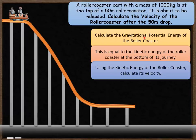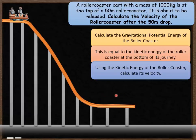The first step is to calculate the gravitational potential energy of the roller coaster at the top of its 50 meter journey. The gravitational potential energy of the roller coaster is equal to its kinetic energy when it reaches the bottom. So the loss of gravitational potential will equal the gain in kinetic energy. By the end of its journey it'll have more kinetic energy equal to the amount of gravitational potential it used to have. The last step is to use the kinetic energy to calculate its velocity, which is what the question is asking us to do.